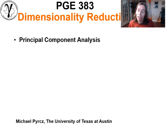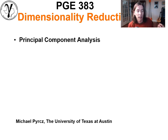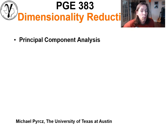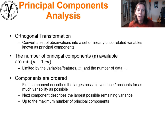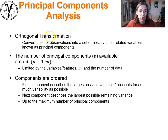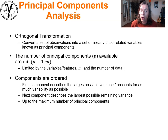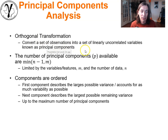In the previous lecture we talked about kernel-based methods for non-linear problems, and factor analysis. Now let's get into principal component analysis. PCA is an orthogonal transformation of predictor features — we convert our set of predictor features into a set of linearly uncorrelated features known as principal components.